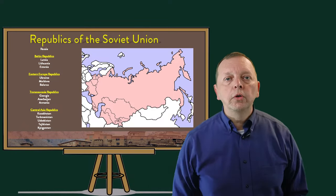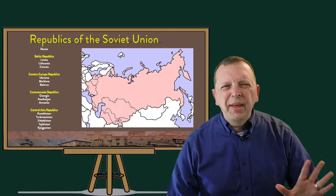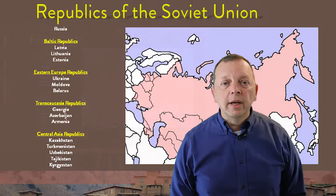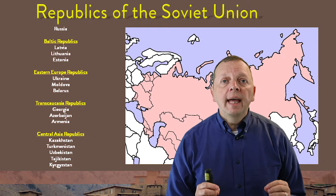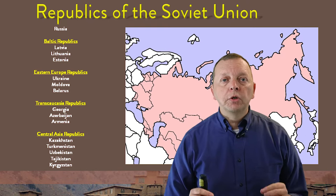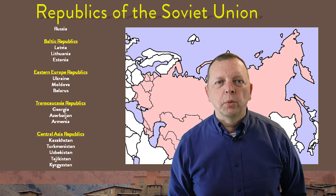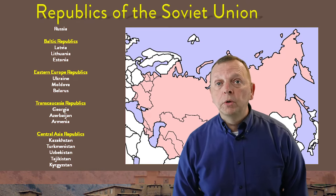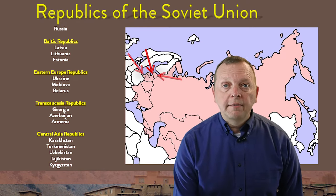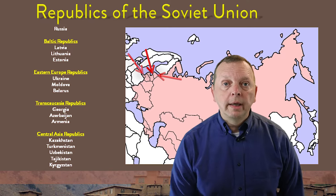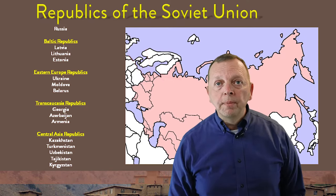During the Soviet Union, the USSR consisted of 15 republics — think of these as essentially being states. When the Soviet Union collapsed in 1991, each of these republics split into independent countries. Russia was one of these republics. Three other republics were the Baltic states of Europe: Latvia, Lithuania, and Estonia, which actually broke away before the Soviet Union fell.